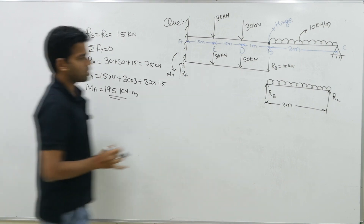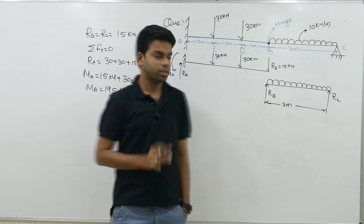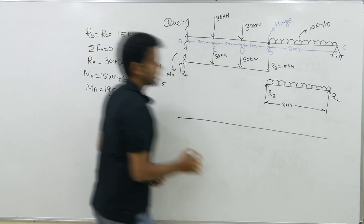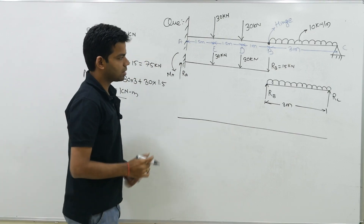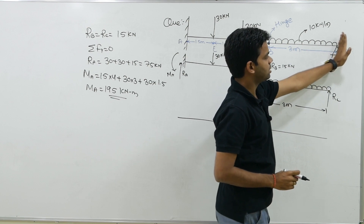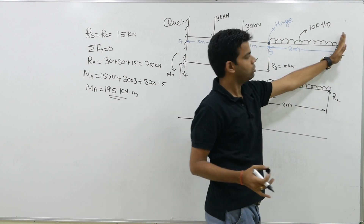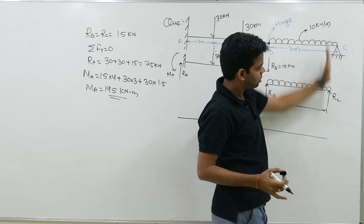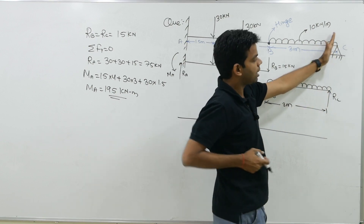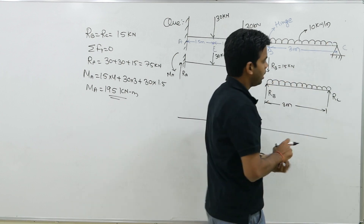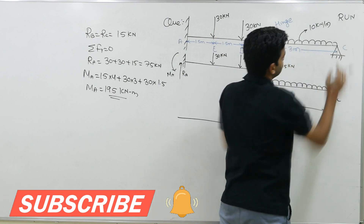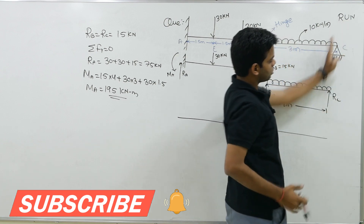Now just draw the shear force and bending moment diagram. Starting from point C: at C, shear force equals RC, which is upward on the right side. The sign convention used is right-side upward is negative. So RC = −15 kN.